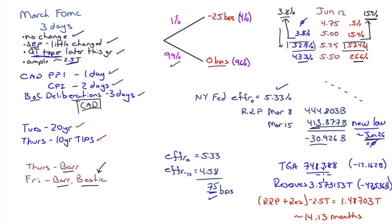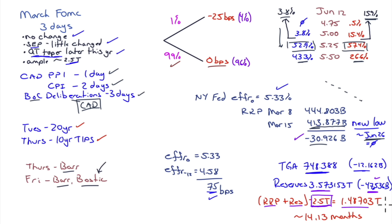TGA sitting at $748 billion — Yellen's target is $750 billion, essentially at target, down $12 billion. Reserves at $3.57 trillion, down $47 billion. Taking reverse repo and reserves together and subtracting what I think ample reserves are — $2.5 trillion — you've got about another $1.5 trillion of balance sheet runoff before you'd have to stop. That's 14.13 months, so a year and two months, and then you'd have to stop.